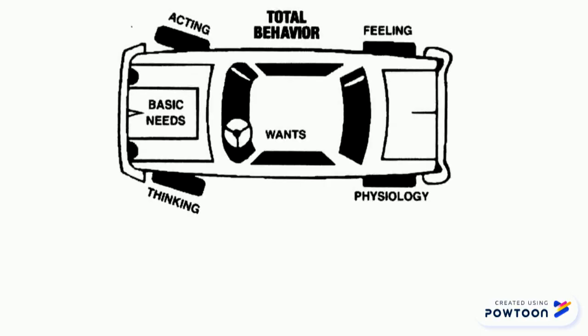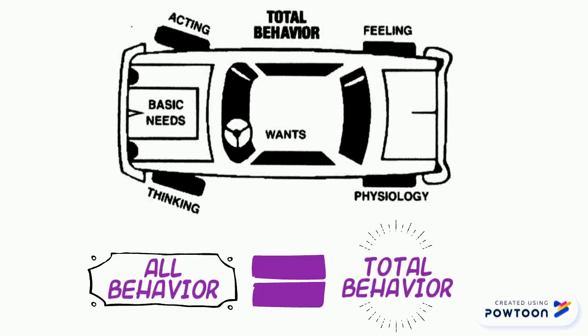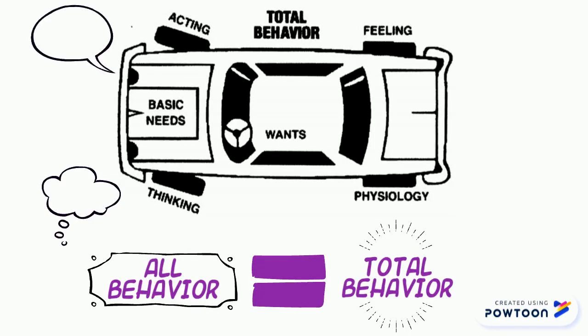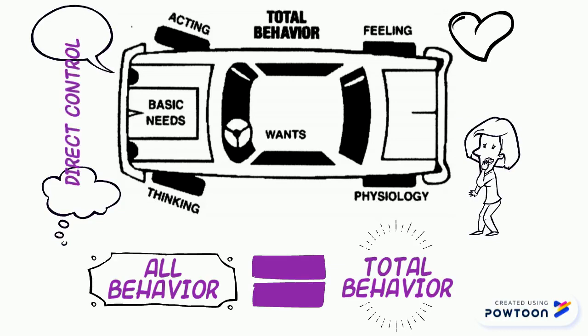To get to our quality world, the car uses a front-wheel drive system called total behavior. In Glasser's theory, all behavior is total behavior. It is made up of our thoughts, actions, feelings, and physical state. We consciously control only the thinking and acting elements of our car. Feelings and physiology follow from how we choose to think and act.